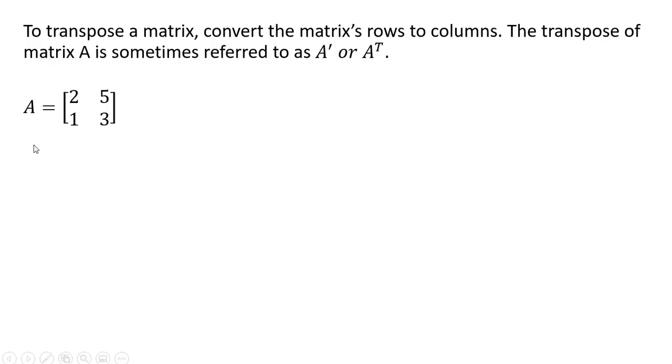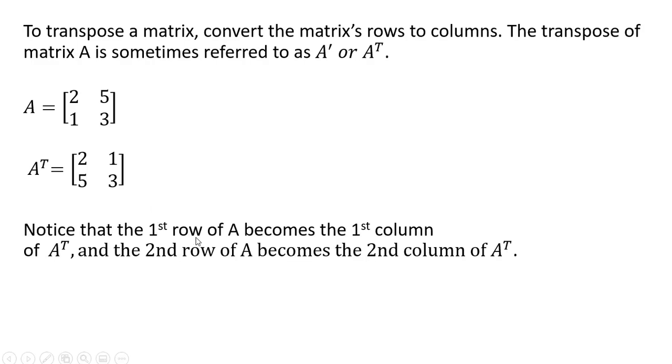Let's do an example. Here we have matrix A, and we're going to transpose it. The first row becomes the first column of the transpose matrix. The second row, 1 and 3, becomes the second column of the transpose matrix. Notice that the first row of A becomes the first column of A transpose, and the second row of A becomes the second column of A transpose.